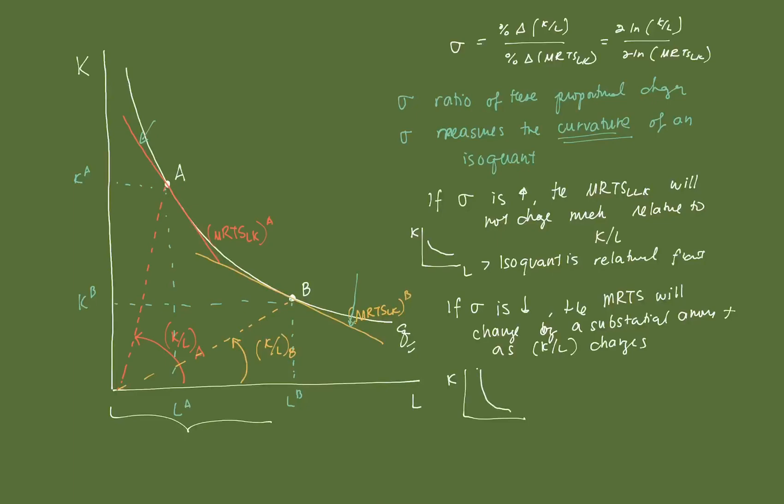And it's possible for sigma to change along an isoquant as the scale of production changes. So it really depends. And again, so to summarize all of this, the elasticity of substitution just measures the proportional change in your capital labor ratio and the marginal rate of technical substitution. And it measures, in reality, the curvature of an isoquant.